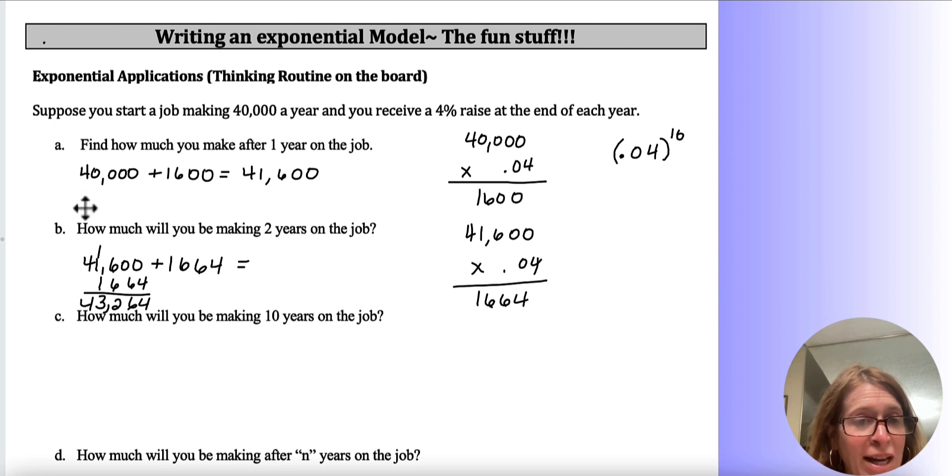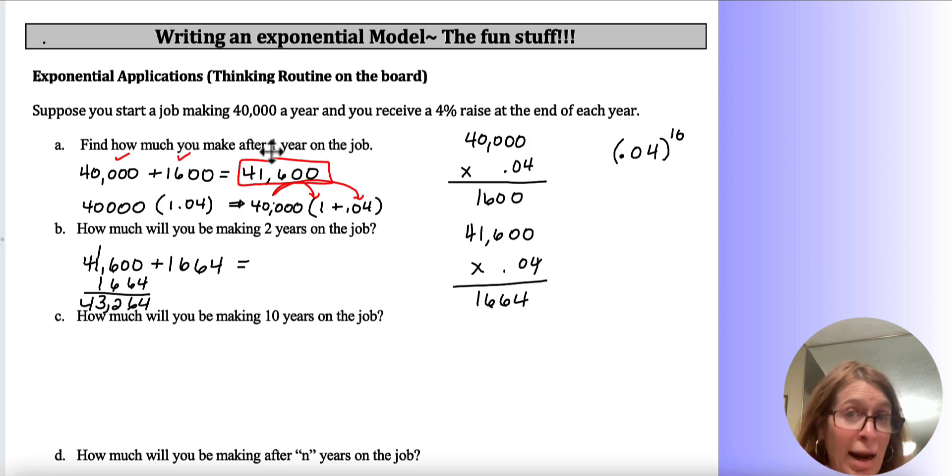Well, if we think about it, if I had taken that original $40,000, and I had multiplied it by 1.04, what that would have done, if you think about the distributive property, what that really means is 40,000 times 1 plus 0.04. So basically mathematically, it took 40,000 times 1, which gave me this. 40,000 times 0.04, which gave me this. And so my final answer, it would be a direct equation to my final answer. I wouldn't have to do those two steps.